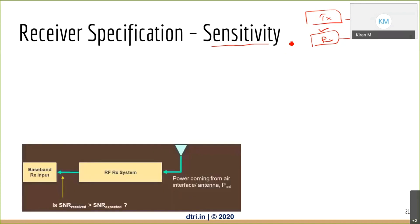Looking at this system — I'm talking only about the receiver — I have an antenna here. The signal from the air comes to the antenna, enters the RF receive system, then goes to the baseband receive system.